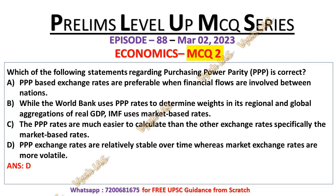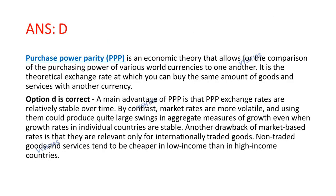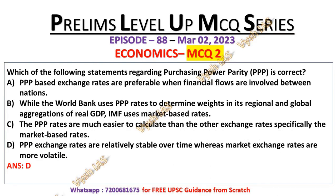The correct answer is option D: PPP exchange rates are relatively stable over time whereas market exchange rates are more volatile. Purchasing power parity is an economic theory that allows for comparison of the purchasing power of various world currencies to one another. It is the theoretical exchange rate at which you can buy the same amount of goods and services with another currency. The main advantage of PPP is that its exchange rates are relatively stable over time. By contrast, market rates are more volatile and could produce large swings in aggregate measures of growth even when growth rates in individual countries are stable.